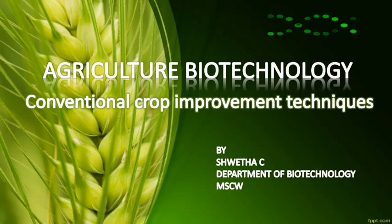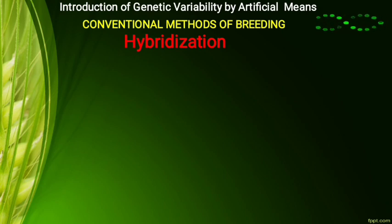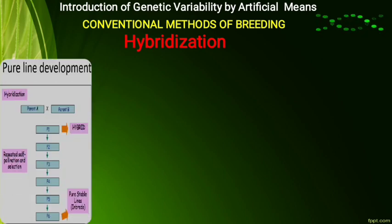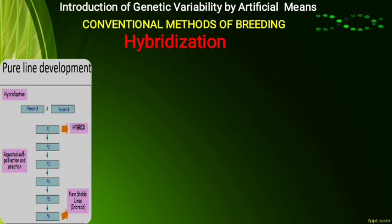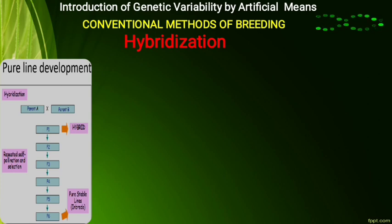We will continue our studies on conventional crop improvement techniques. Next comes the introduction of genetic variability by artificial means. The conventional method of plant breeding can be considered as a manipulation, meaning alteration at the chromosome level — the combination of chromosomes can be altered to get a hybrid plant. In general, there are three main procedures to manipulate the chromosome level of the plant: the given population having desired characteristics is selected and further used for breeding as well as cultivation.